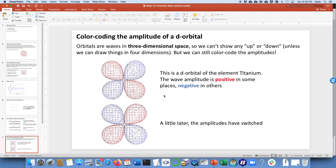If we now go back to our orbital idea, here's the deal. Orbitals are waves in three-dimensional space, not in the one-dimensional space of a string. There we can't show an up or down unless we can draw and visualize things in four dimensions, which I can't do. However, we can still color code the amplitudes. In other words, I go to some point in space and I say, okay, the amplitude of the wave is positive because I can see it's red.